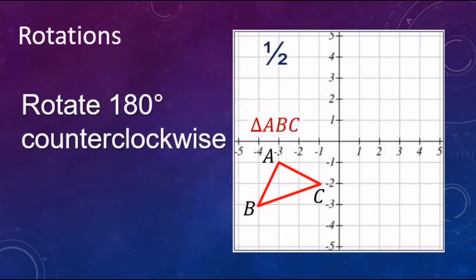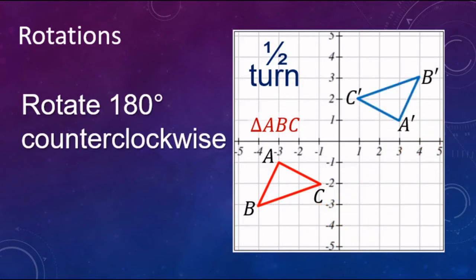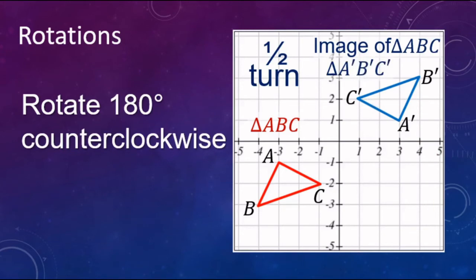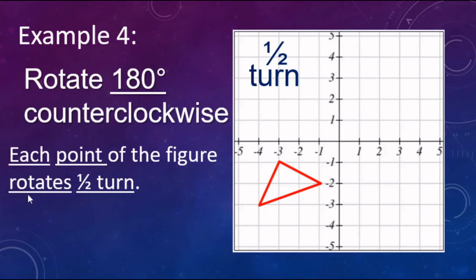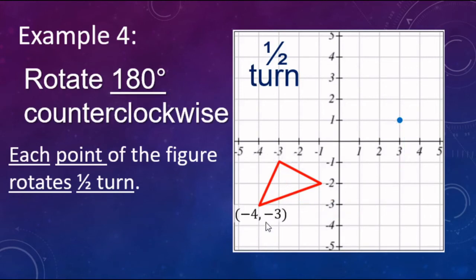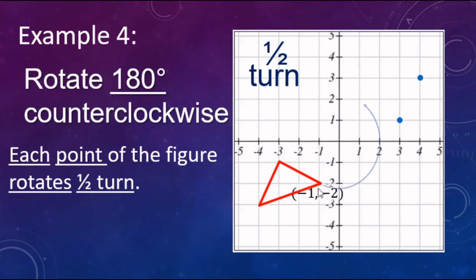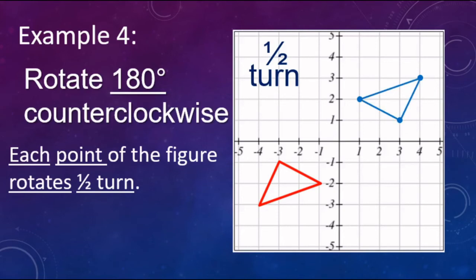Next, let's look at a 180 degree rotation counterclockwise — that's a half turn. The blue one is the image of triangle ABC: A prime, B prime, C prime. Each point rotates a half turn. Starting at negative three, negative one — 180 degrees goes to three, one. The next vertex at negative four, negative three goes to four, three. And the last vertex at negative one, negative two goes to positive one, positive two. Connect the dots — there's your 180 degree rotation. The negatives just turn to positives, or vice versa — make both coordinates opposite.